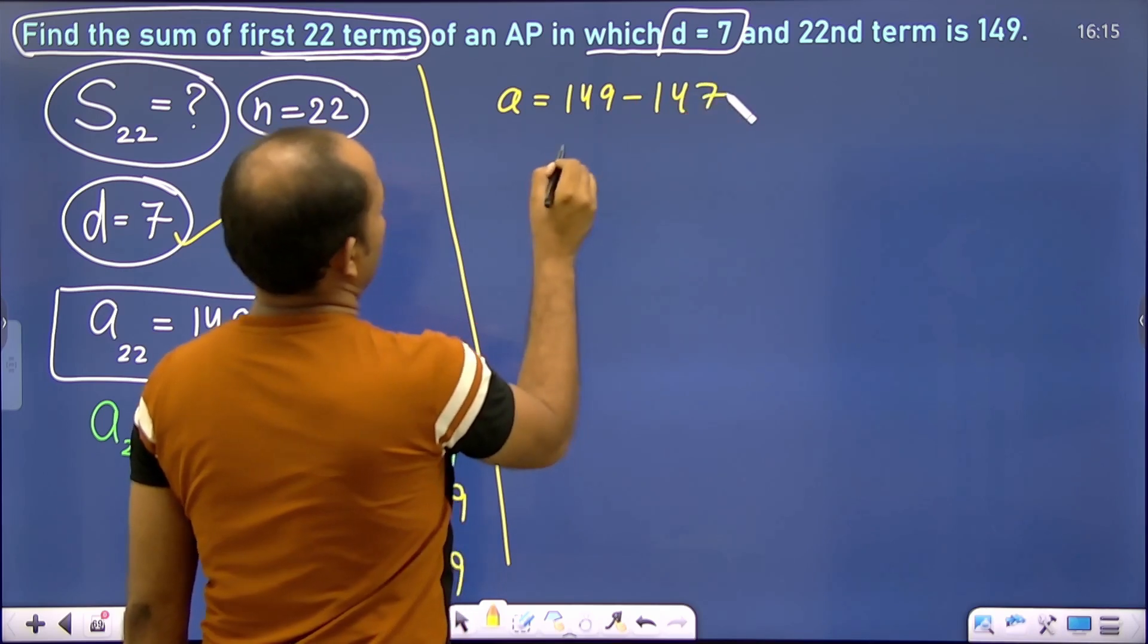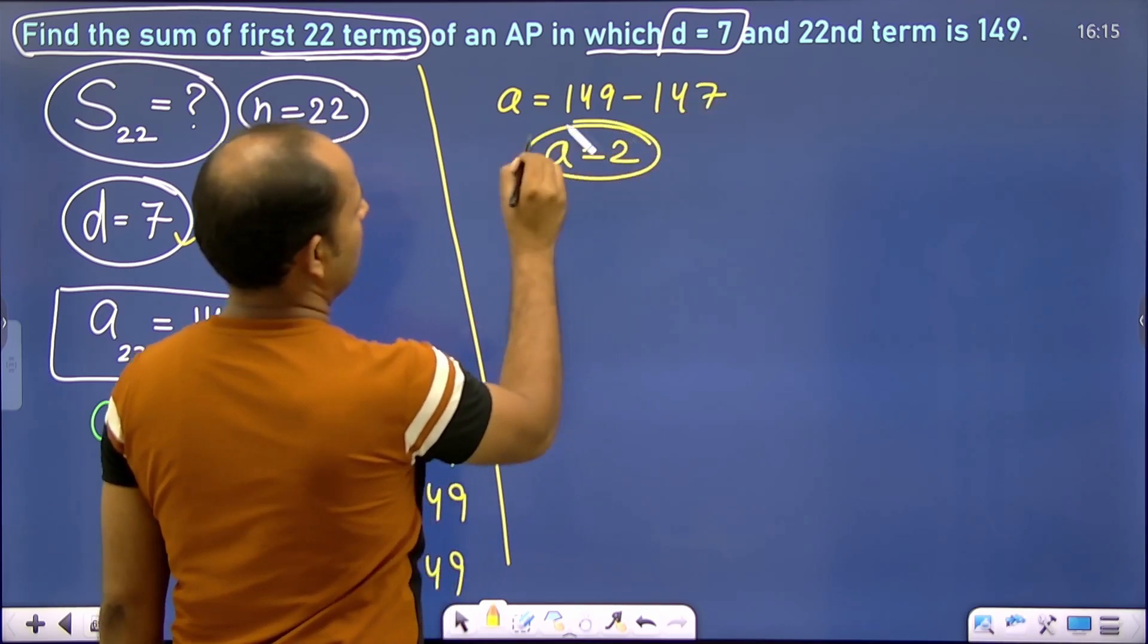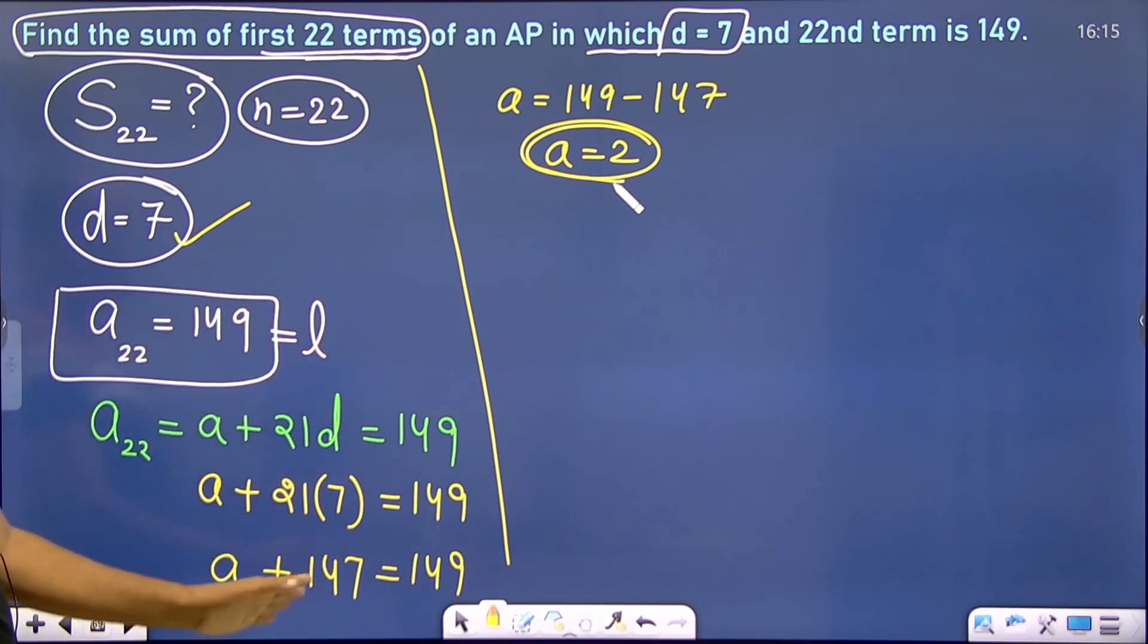149 minus 147, so a's value is how much? a = 2 basically.